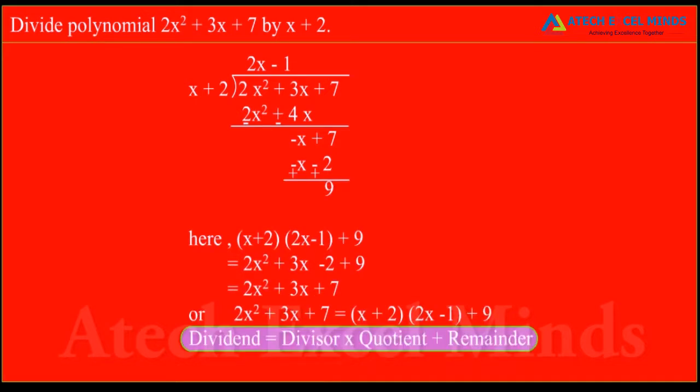Divide polynomial 2x square plus 3x plus 7 by x plus 2. When we apply long division method, we get 2x minus 1 as quotient and 9 as the remainder.